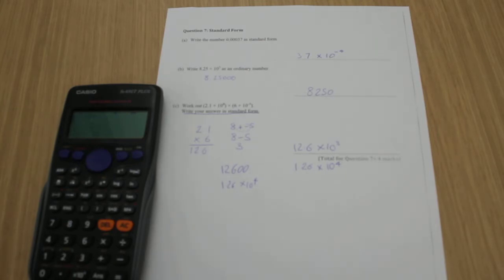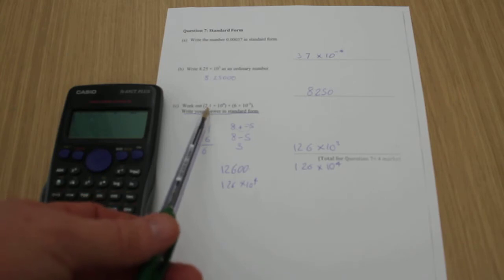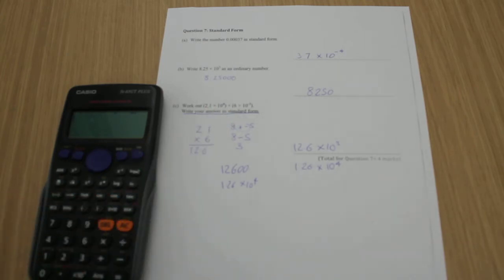Now, working out 2.1 times 10 to the power of 8 by 6 times 10 to the power of minus 5, I've got two different ways of doing this, a calculator and a non-calculator method. Let me show you the non-calculator method first. So I'm going to do 2.1 times 6, and I've got 12.6.